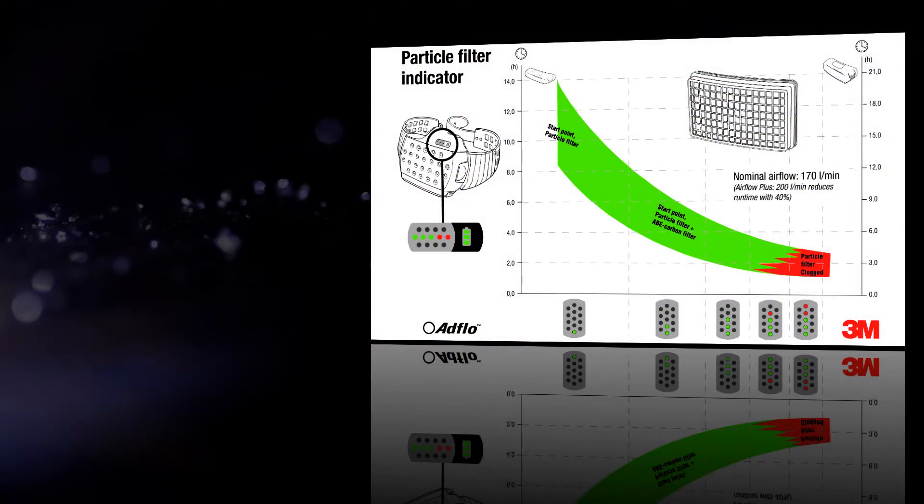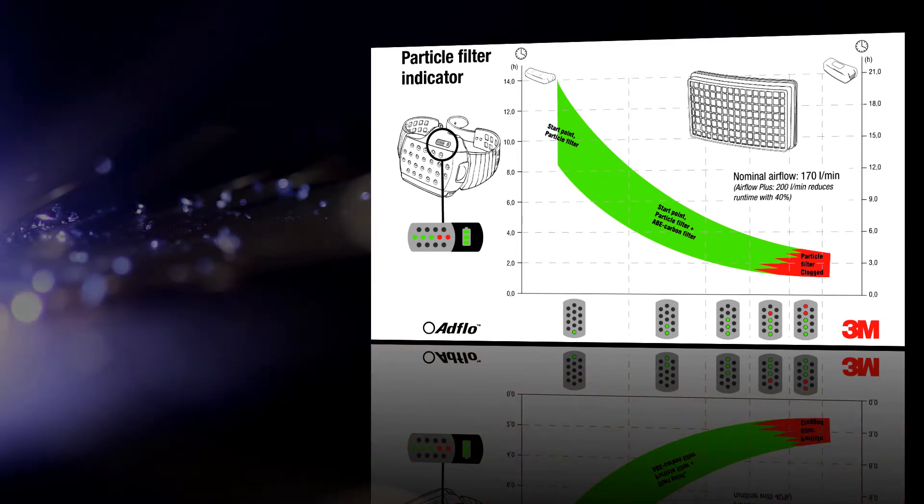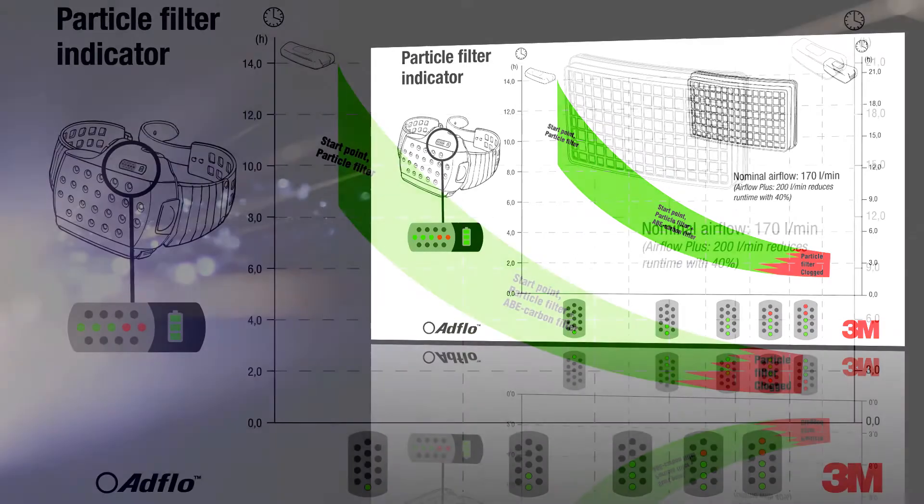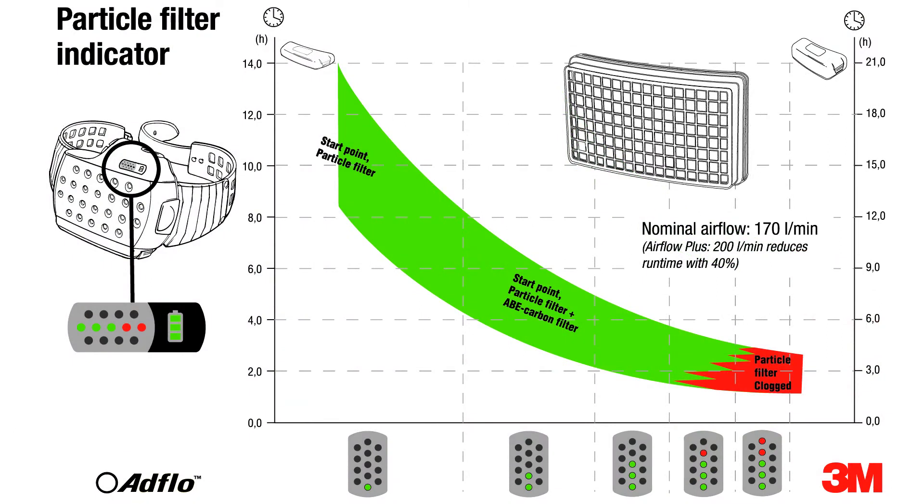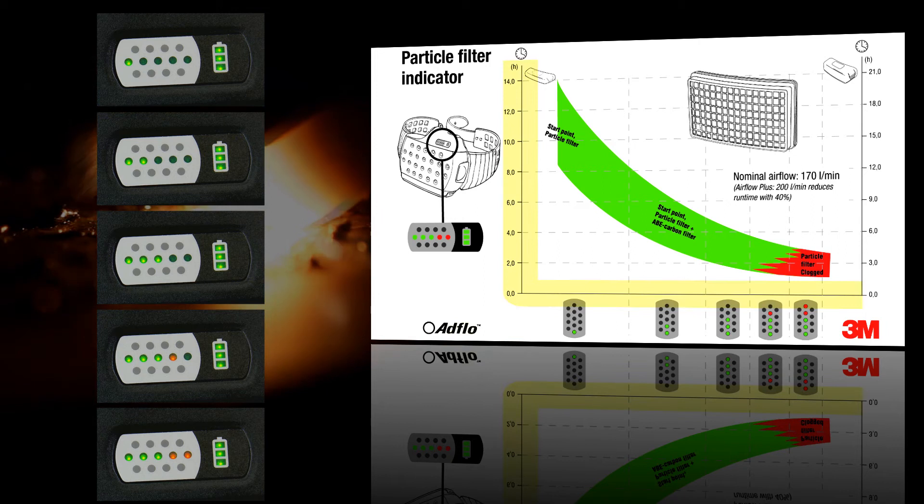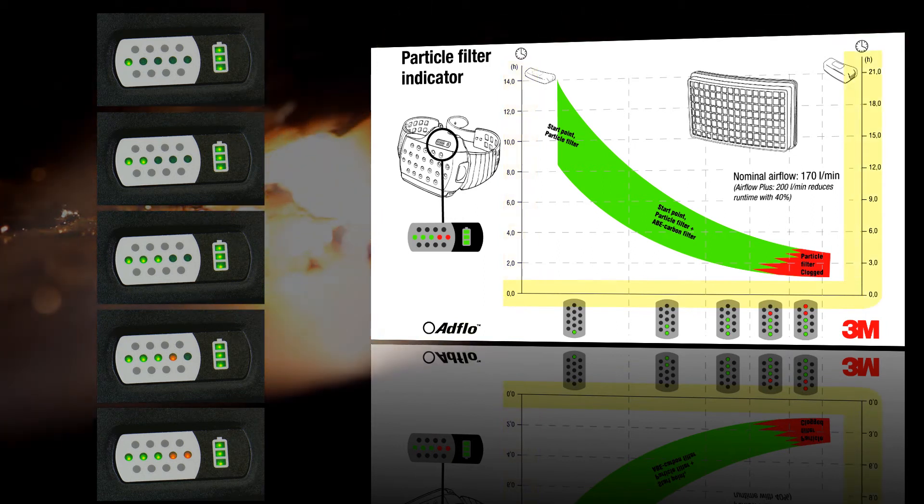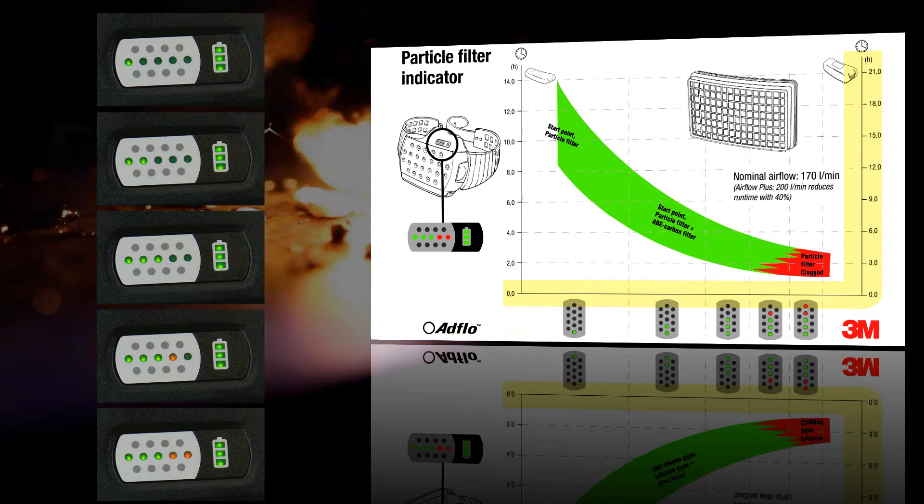Filter clogging affects battery life, but you can calculate the expected battery life based on the condition of your filters. This graph is supplied in the user instructions. Compare the number of lights on your filter clogging indicator with the curve of the graph. If you are using the standard battery, you will need to read off the left hand side of the graph, and if you are using the heavy duty battery, you will need to read off the right hand side of the graph.